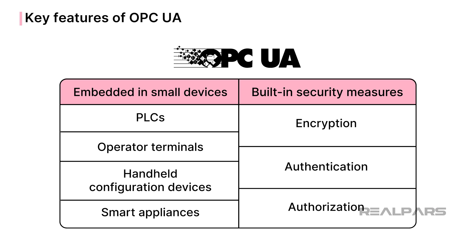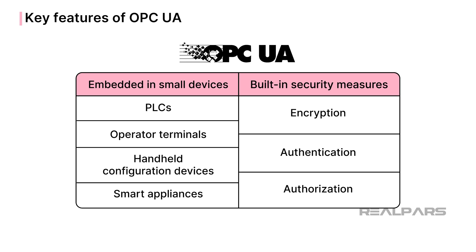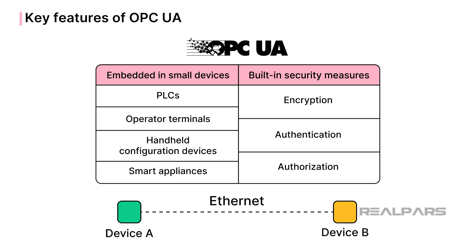Since OPC UA is based on the familiar TCP/IP protocol, its use can be extended to all industries and applications. If an Ethernet connection can be made to the device, OPC UA can potentially be used.